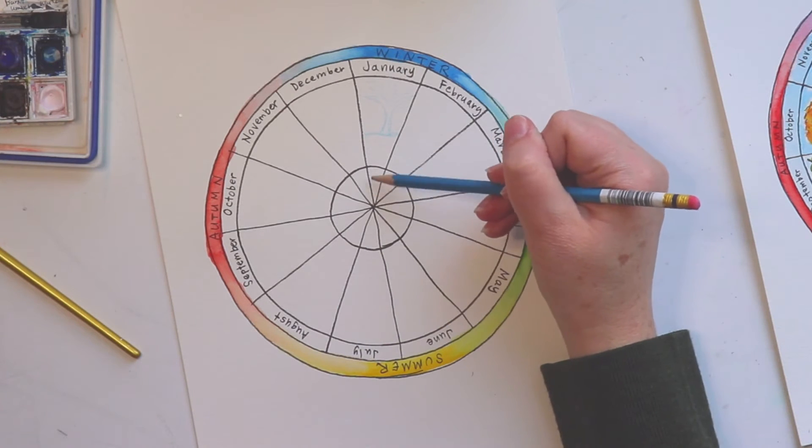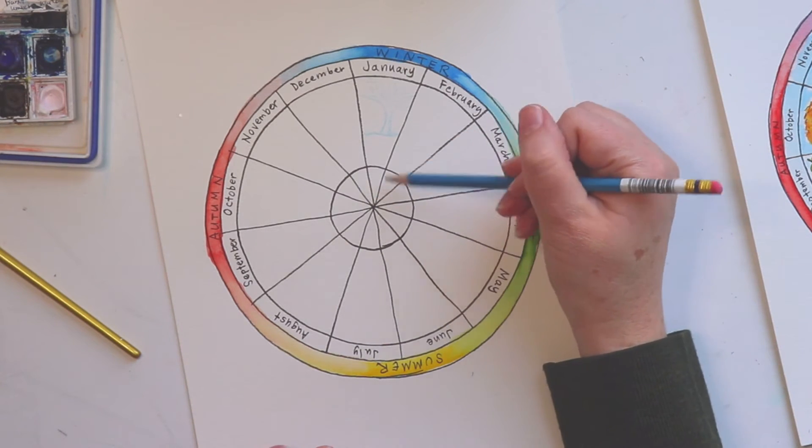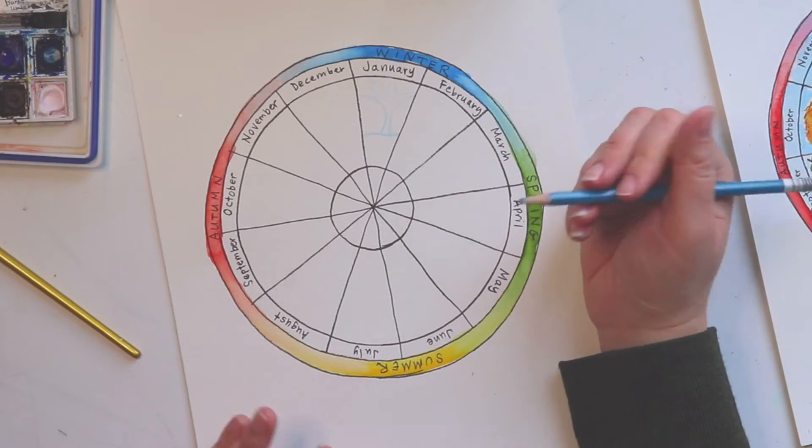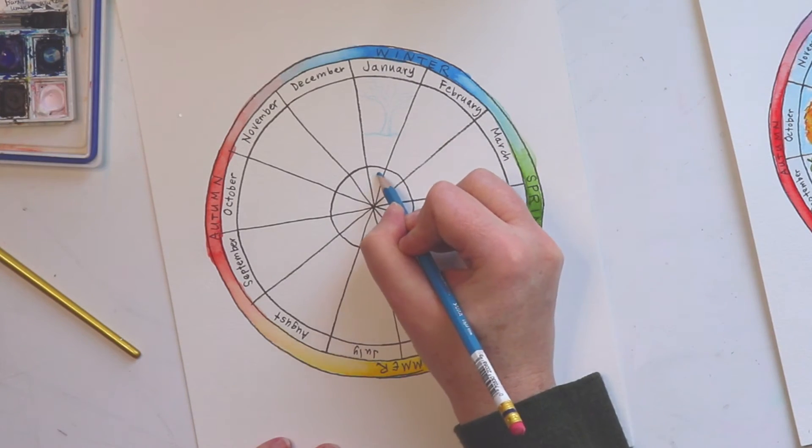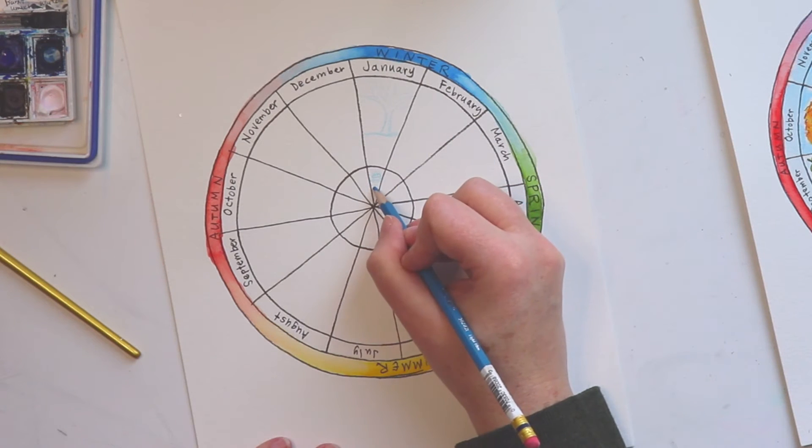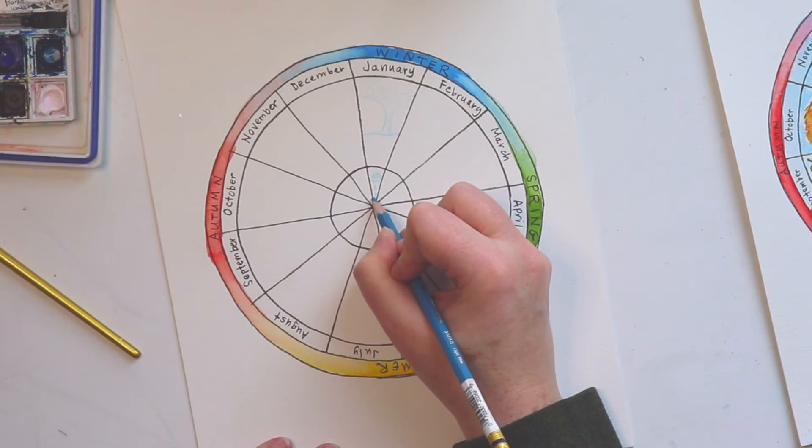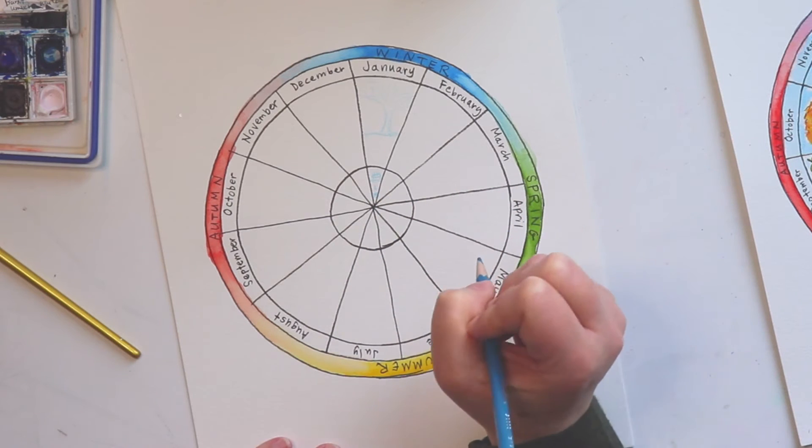And then down here, this is to signify an important event that happens in that month. So for me, I'm going to put a birthday cake because January is when my twin daughters celebrate their birthday. So I'm going to put that and I'm going to put an L and an M. That's the two letters of their names.